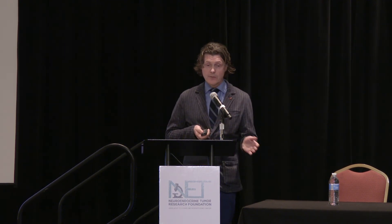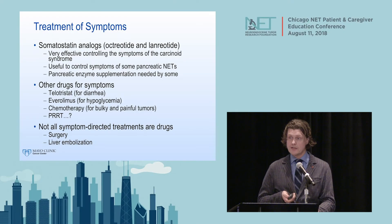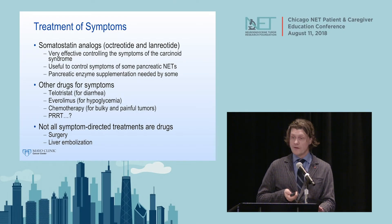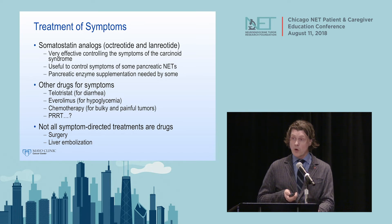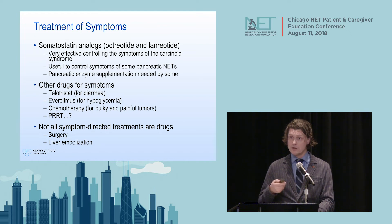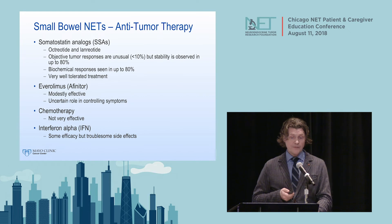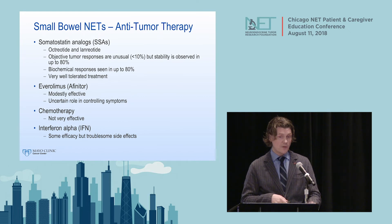That is why I believe we need dedicated neuroendocrine tumor centers where people truly devote themselves to treating these cancers. For symptoms, we have somatostatin analogs, other drugs for diarrhea, telotristat, everolimus for hypoglycemia and insulinoma, chemotherapy, and PRRT. Not all symptom treatments are drugs—we will also hear about liver embolization and surgery as part of treating symptoms.